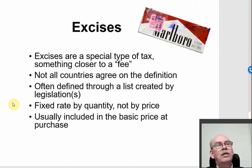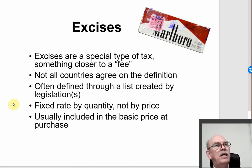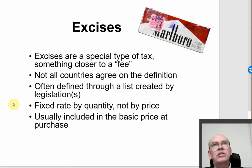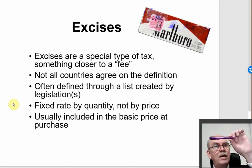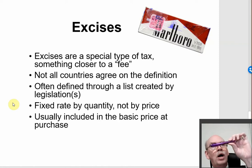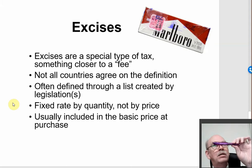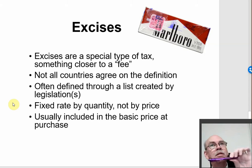Generally in the United States, taxes are after the basic price, but excises are usually included in the price because if the price goes up or down it doesn't change. With a percentage tax, if it's 7% of a 1,000-won pen that's 70 won, but if the pen price changes to 1,100 won, the tax changes from 70 to 77 won because it's 7% times 1,100.